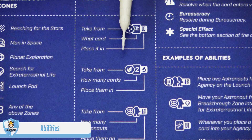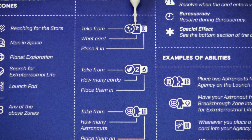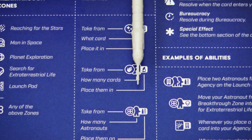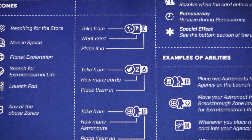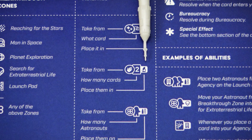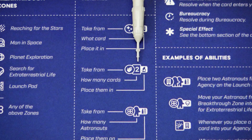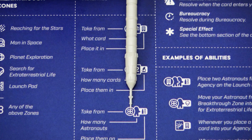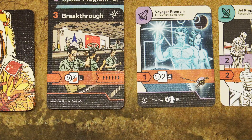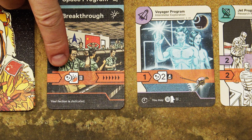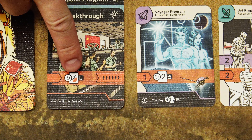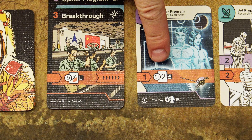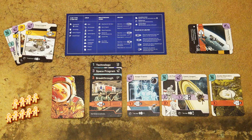All abilities in the game follow the same symbology with three symbols: the middle one indicates what — for example a propaganda card, two cards, one astronaut, or two astronauts. The symbol on the left indicates where you take it from, and the symbol on the right indicates where you place it. For example: take two cards from your hand and place them in your laboratory; take a propaganda card from the universe and place it in your agency; or take one astronaut from any breakthrough area and place it on the launch pad. If you are unsure about any symbol, you can find them all on your faction tile.